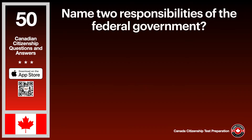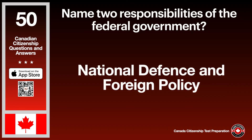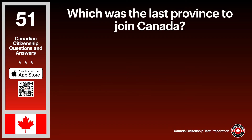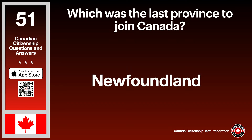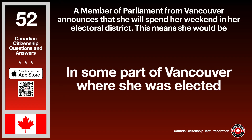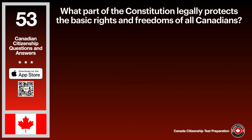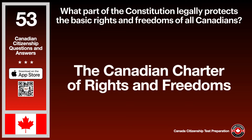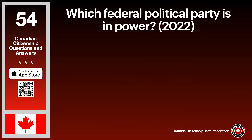Name two responsibilities of the federal government. The answer is national defence and foreign policy. Which was the last province to join Canada? The answer is Newfoundland. A member of parliament from Vancouver announces she will spend her weekend in her electoral district. This means she would be in some part of Vancouver where she was elected. Which federal political party is in power? The answer is the Liberal Party.